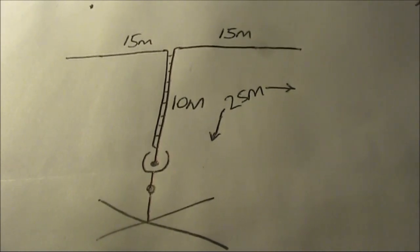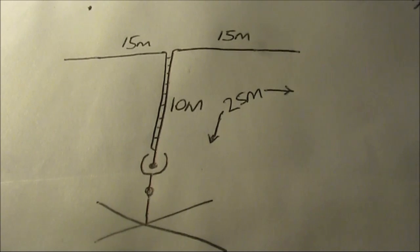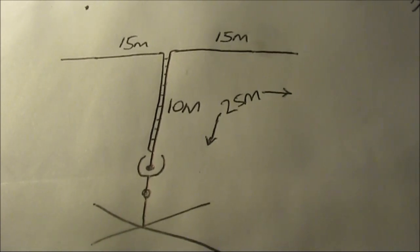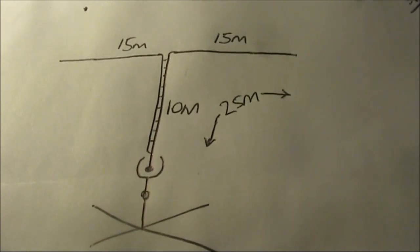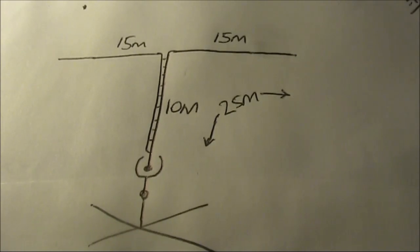The feed line is 10 meters, and each half across the top is 15 meters. Add the two together and you get 25 meters, or one quarter of a wavelength.